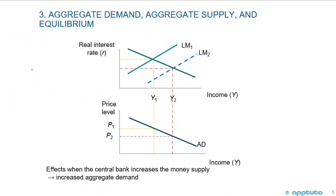Now we're combining the two charts — the IS-LM curve and the aggregate demand curve. On the aggregate demand curve, the Y axis has the price level and the X axis has income. Where we increase the money supply, the real interest rate will decrease, the price level will decrease, and aggregate demand is going to increase. This shows the relationship between the real interest rate and income through the IS-LM curves, reflecting through the price level and income through the aggregate demand curve.